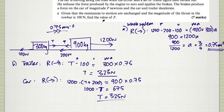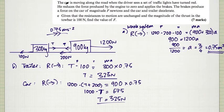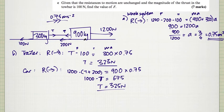Part C involves an entirely new setup with the same car and trailer. The resistances to motion are unchanged — still 200N and 100N. The driver sees a red traffic light, reduces the engine force to zero, and applies the brakes, producing a braking force of F newtons. The car and trailer decelerate, and the thrust in the tow bar is 100 newtons. We need to find F.